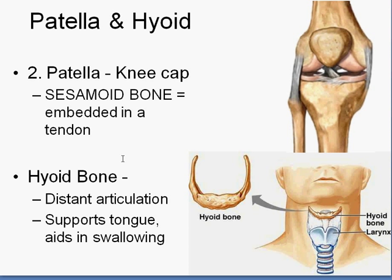Another bone I won't quiz you on — but now that we're talking about sesamoid bones — is the hyoid bone, located up in the neck. It's interesting because it doesn't articulate to make a joint; it just kind of hangs out. It's used for swallowing, moving the tongue, and helping out the epiglottis, which we'll talk about when we get to digestion.